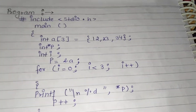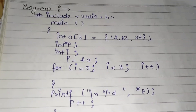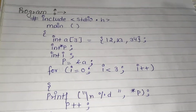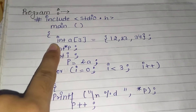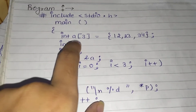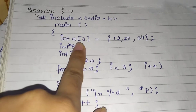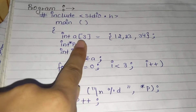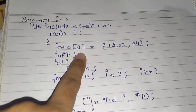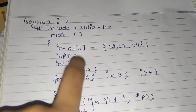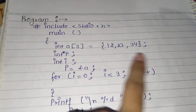Now let's see this example. We have hash include stdio.h and the main function. We have a simple variable, then we have an array. An array has a data type, a variable name, and a size. Here the size is 3, which means it holds 3 values.